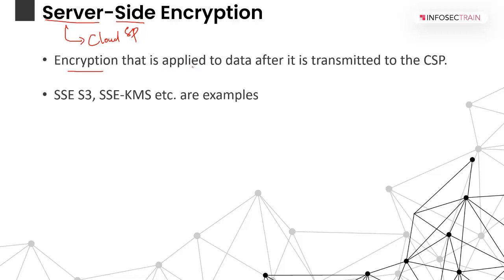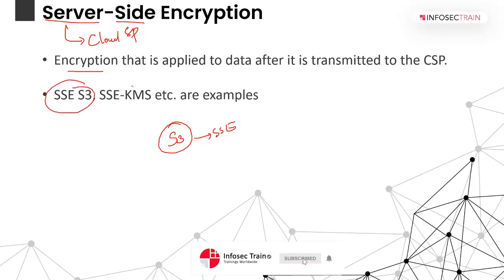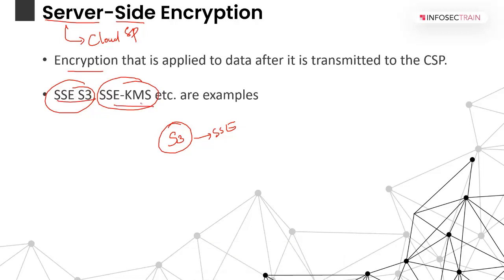You can see this in action if you go to Amazon AWS — there is a storage service called Amazon S3. In Amazon S3 you will see an option for server-side encryption. They support two kinds of encryption: SSE-S3 and SSE-KMS. I'll discuss those in upcoming lectures, but all of these things happen after we upload the data to the cloud platform — that is what we call server-side encryption.